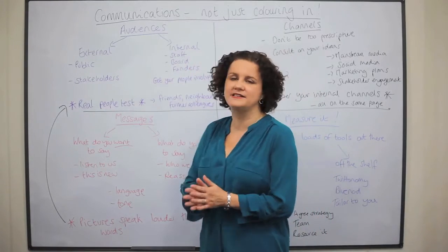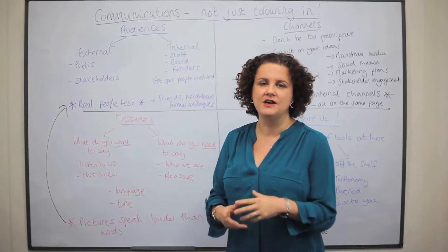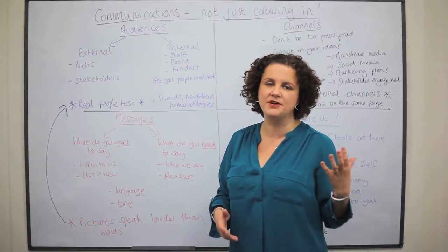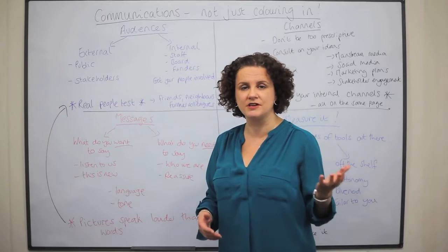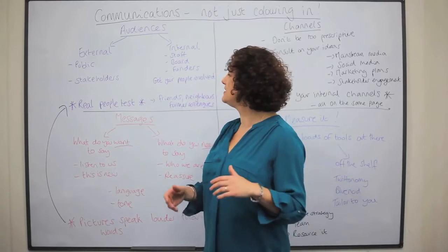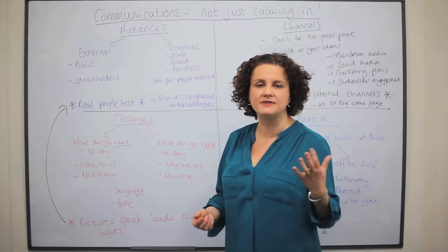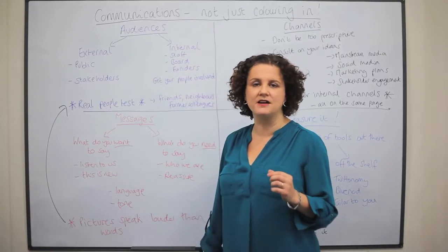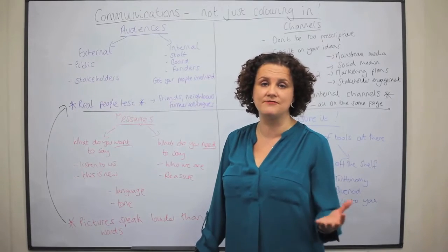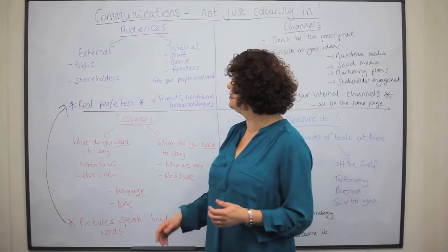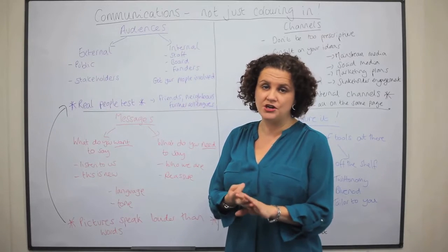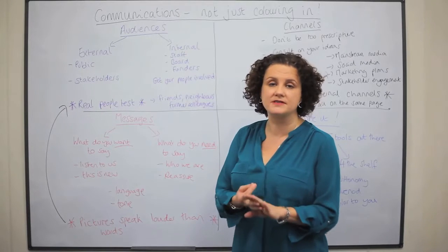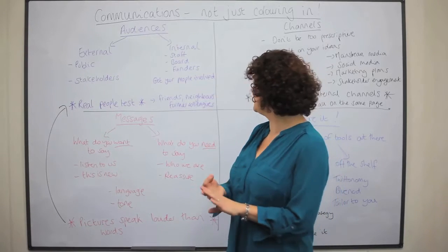First of all, you need to think about your audiences and who it is that you're trying to reach. Most organisations will instantly think about their external audience — the person they might be trying to sell something to or communicate their core messages to. They might think, oh, we need to be talking to the public, we need to be talking to our stakeholders. But it's really important to not forget your internal audiences as well, because they will be integral to delivering to those external people. So remember your staff, you might have a board, you might have funders that you need to think about. All of those stakeholders need to be part of your communication strategy.